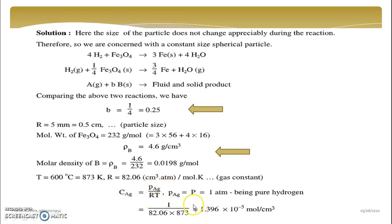So CAG will be PAG upon RT. In this way, P is your 1, P is PAG, because it is pure hydrogen we are using. So P is 1, R is 82.06, and T is 873 Kelvin. So CAG value is 1.396 into 10 raise to minus 5 mole per cc.